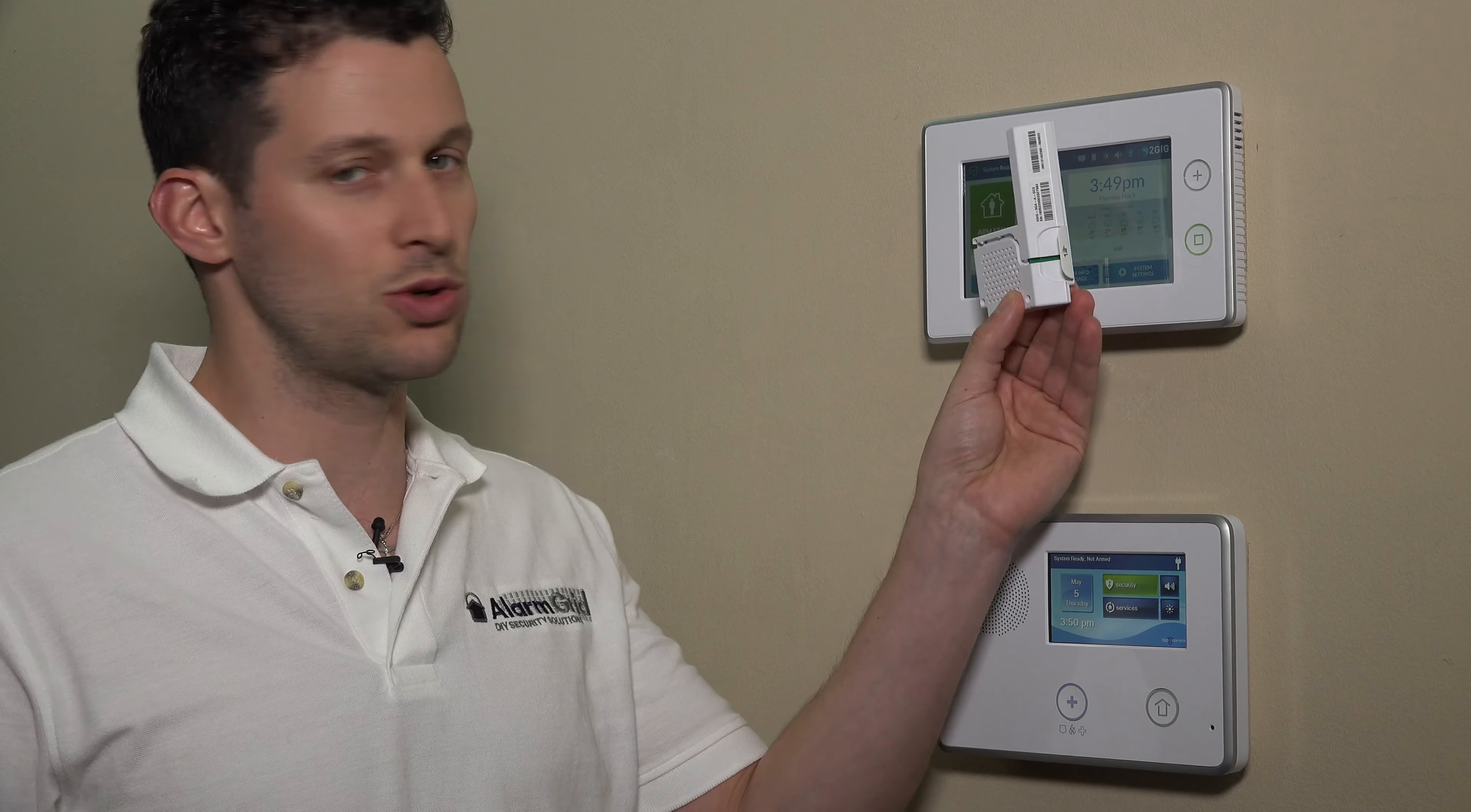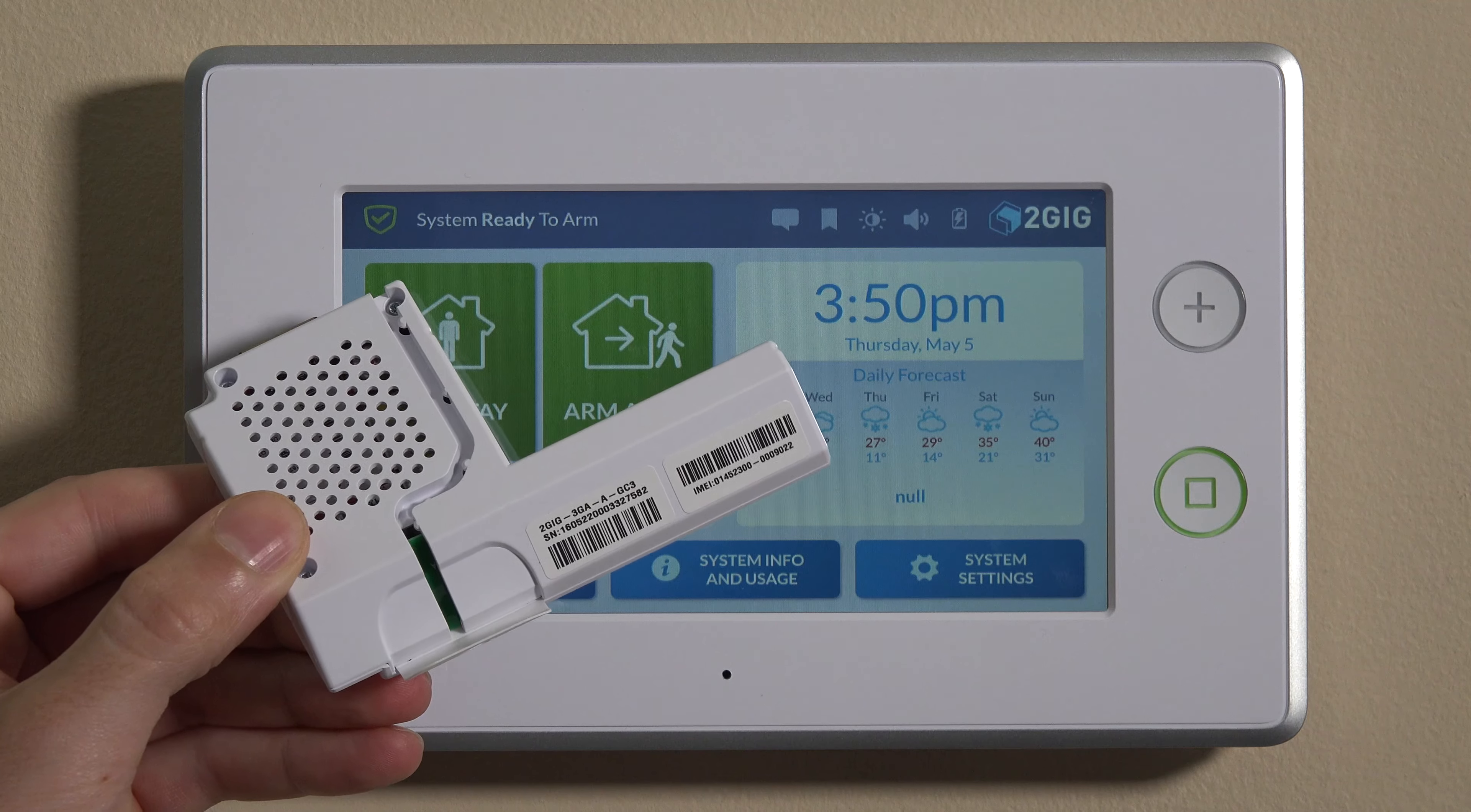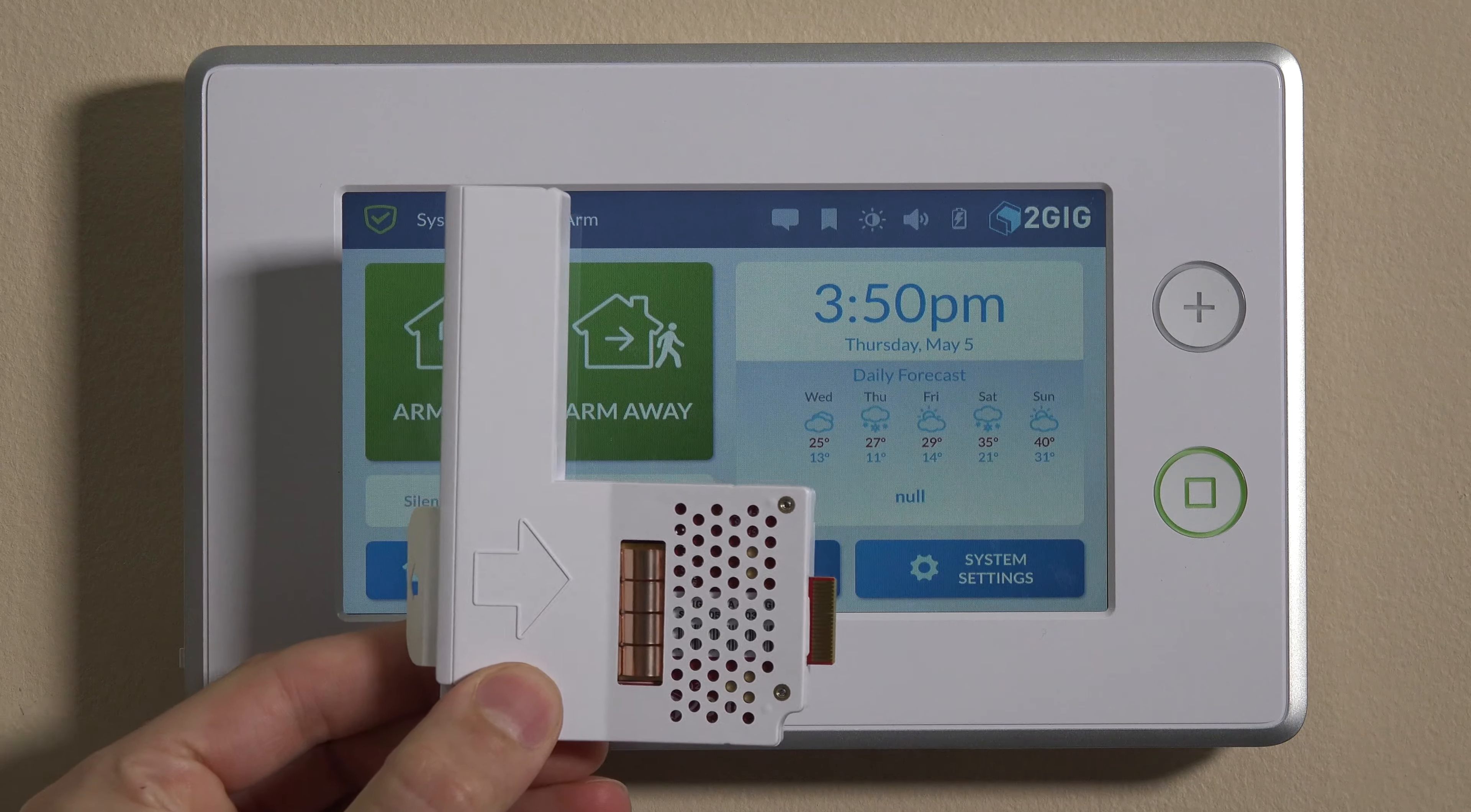Today, we'll be working with the 2GIG 3GA-A-GC3. This is a cellular module. You'll see it has this kind of right angle shape so that it can fit on the left side of the panel. This is an alarm.com radio. So the 2GIG Go Control 3, or GC3, supports communications to alarm.com, which is an interactive service that hosts cellular communications. And it will trickle down to an app on your smartphone, tablet, or computer.